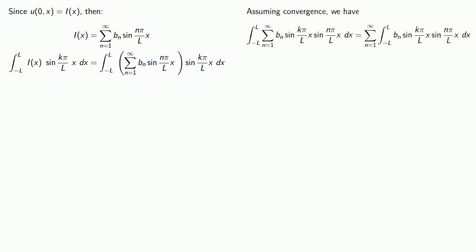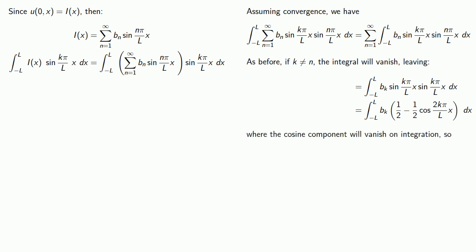Since we're integrating over one full period, if k is not equal to n, the integral will vanish, leaving only the sine k terms, which we can rewrite. Since we're integrating over one full period, the trigonometric terms will be zero. So the cosine component will vanish on integration, and after all the dust settles, we get our result.